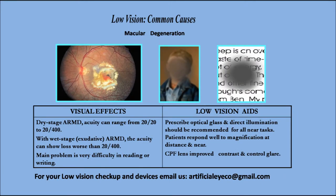Moving on to macular degeneration — what are the visual effects? In the dry stage of ARMD (age-related macular degeneration), acuity can range from 20/20 to 20/400. With the wet (exudative) stage, acuity can show loss worse than 20/400. The main problem is great difficulty in reading or writing. For low vision aids, prescribe optical glasses and direct illumination should be recommended for all near tasks.